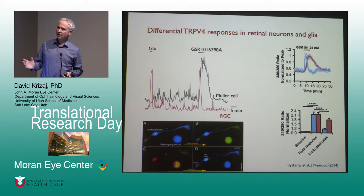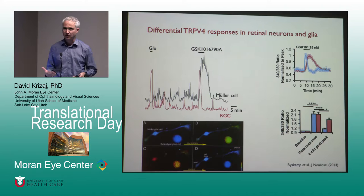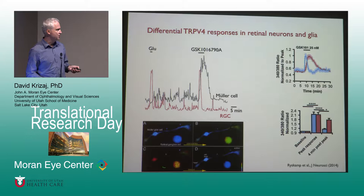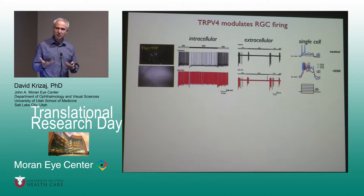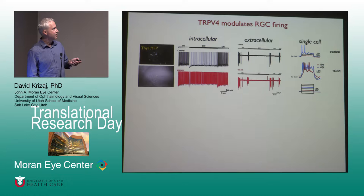We can take a chemical that selectively activates TRPV4 channels, load the cells with calcium dye, and look at what is going on with calcium signals. We see huge calcium increases in response to this channel. What is amazing and very interesting is that the pattern of the calcium response in the neuron — the ganglion cell — and in the Müller cell are extremely different. In the neuron, it desensitizes very quickly, while in the glial cell the signal is huge and stays on for as long as the stimulus is going on.